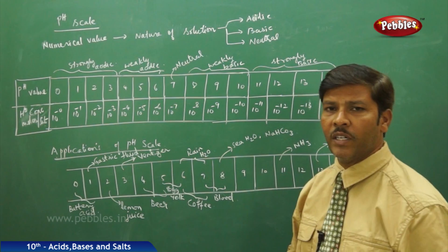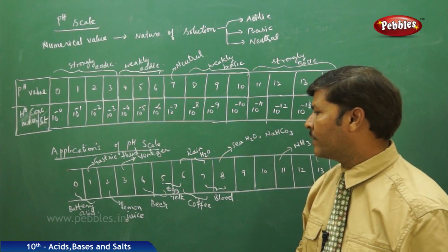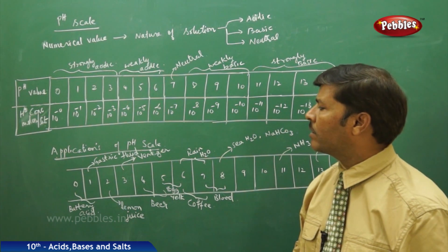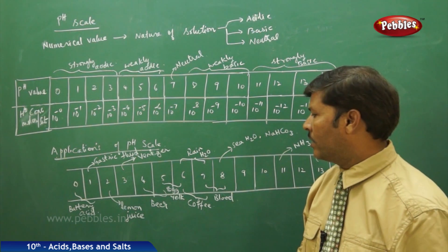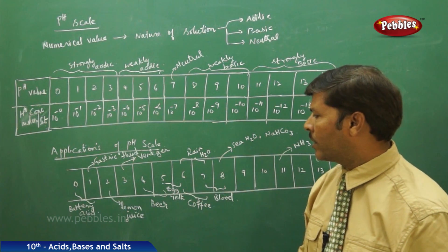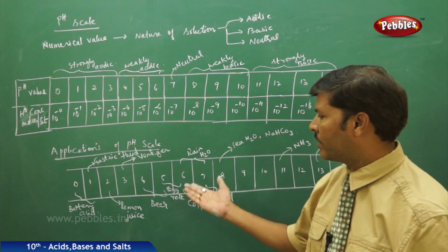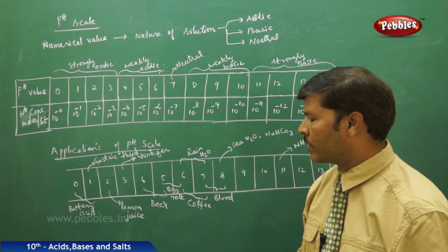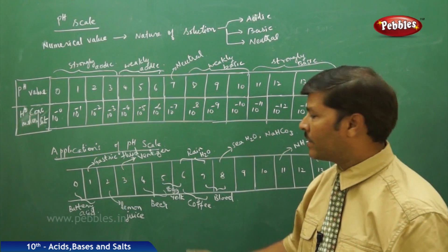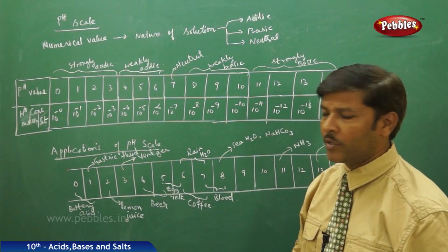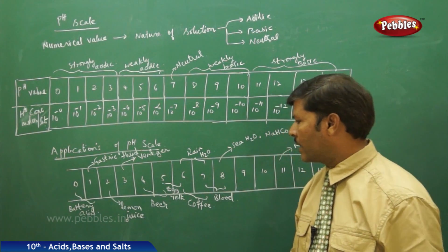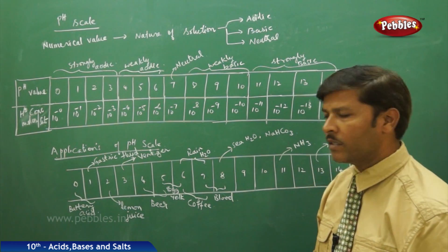Vinegar, also called acetic acid, is a weak organic acid used for storing spicy foods and meat, and acts as an anti-rancidant to prevent food spoilage — its pH value is 3. Beer, an alcoholic beverage, has a pH of 4 to 5. It is highly acidic and its consumption can lead to fatigue and obesity if not balanced with physical activity.